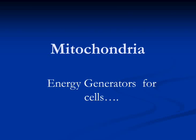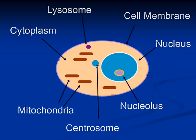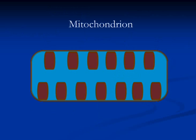Mitochondria are one of the most important components of human cells, found within the cytoplasm. One is known as mitochondrion and several are known as mitochondria.